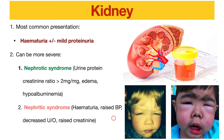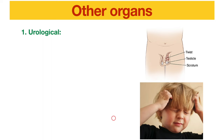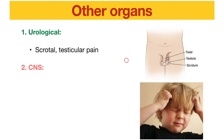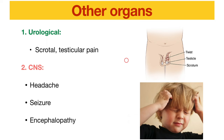HSP can also involve other organs. Patients can have scrotal pain or testicular pain, mimicking testicular torsion. They can also have CNS involvement, presenting with headache, seizure, or encephalopathy. These are more rare presentations.